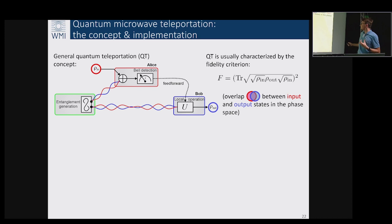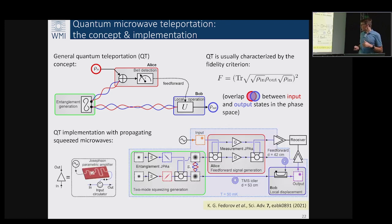The state is getting destroyed here and then reappears here, and the overlap in the phase space between these two states defines the fidelity criterion. If the fidelity is one then everything is perfect; if it is less than 50 percent that typically is known as the classical threshold, so you typically want fidelity to be larger than 50 percent.